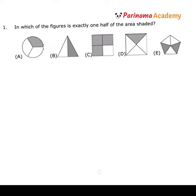Question 1: In which of the figures is exactly one half of the area shaded? For A, I see that the circle is split up into three equal parts in which one of them is shaded, and one third is not equal to one half. So A cannot be the answer.